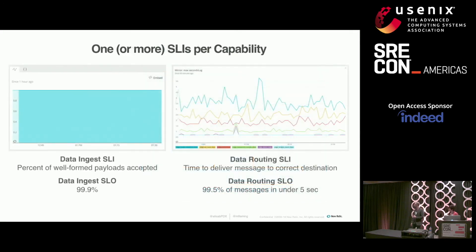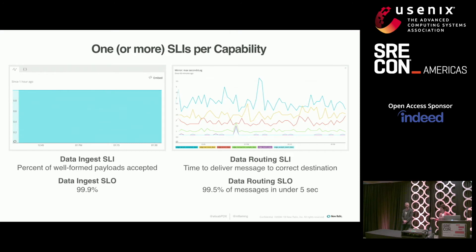For data ingest, we want to be able to say that X percent of well-formed payloads are accepted. We might determine that by monitoring the number of payloads that return a 200 response. Since this is an async non-transactional endpoint, we don't really care about response latency. For data routing, however, we want to be able to measure that some Y percent of messages are available on the message bus to be read within some number of seconds — so for that, we do actually care about latency. We can measure this by looking at the data ingest timestamp and comparing it to the time that message was actually available on the bus to be read.